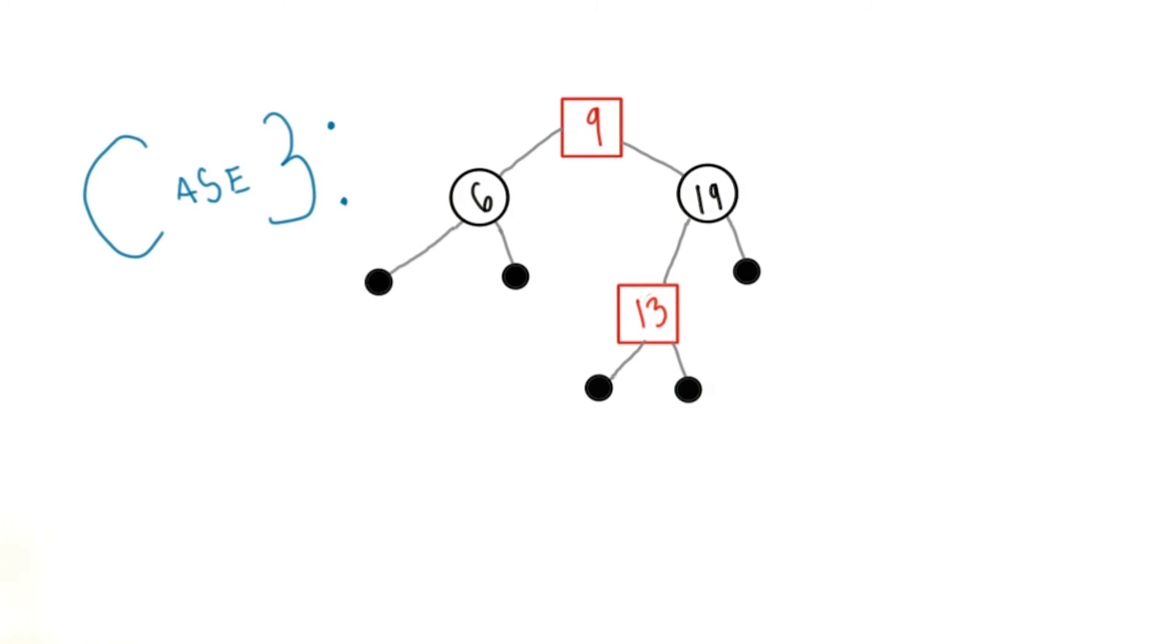The biggest problem here is that we could have violated another property by changing the grandparent. We can just treat the grandparent as a newly inserted node and change it or its ancestors according to the same cases and rules. Here we just treat it like case one and change it back to black, since we still want the root to be black.